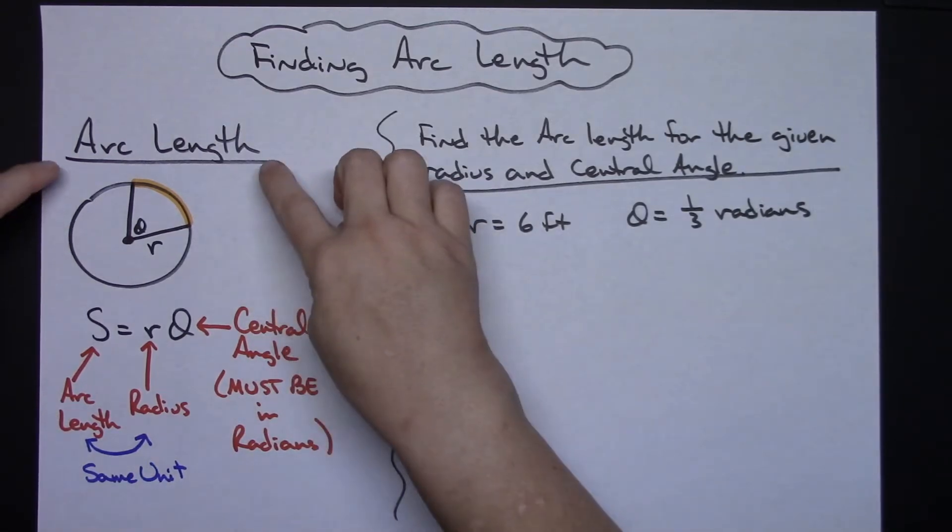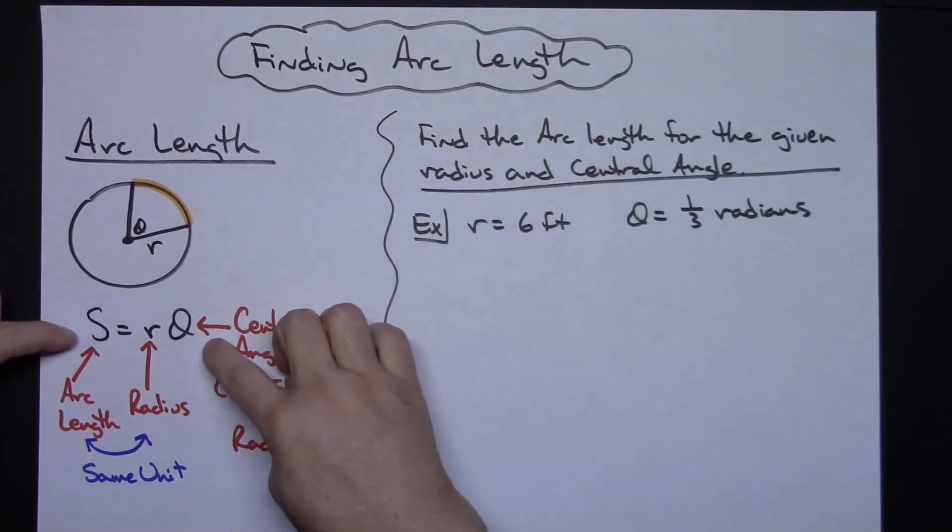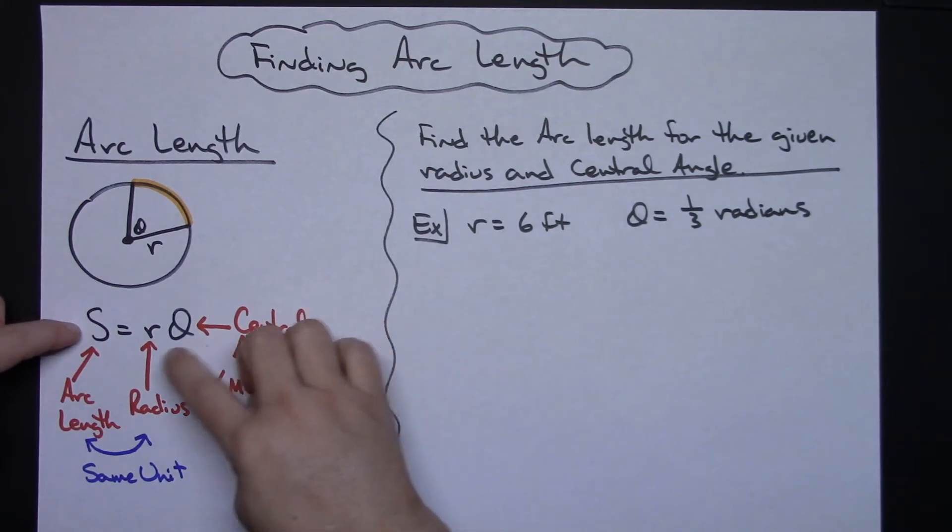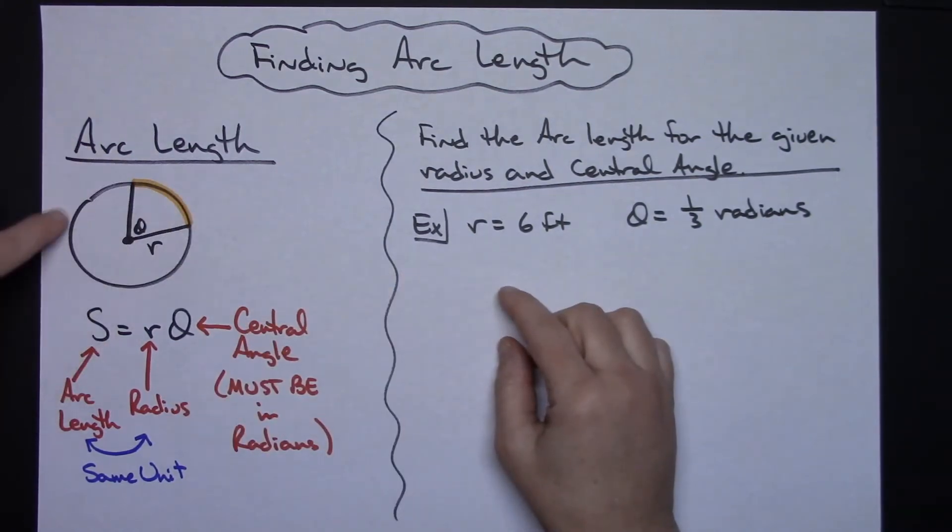First of all, your formula for arc length is going to be a capital S equals r theta. Here's a picture that represents it. I've got a circle. I have a central angle theta and that circle has a radius r, and this formula will then calculate the arc length.